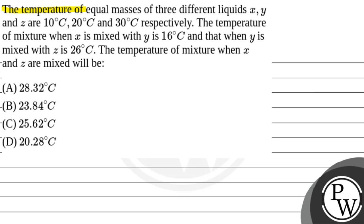The temperature of equal masses of three different liquids X, Y and Z are 10 degree Celsius, 20 degree Celsius, and 30 degree Celsius respectively. The temperature of mixture when X is mixed with Y is 16 degree Celsius and that when Y is mixed with Z is 26 degree Celsius.